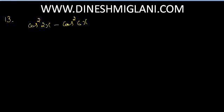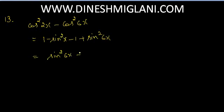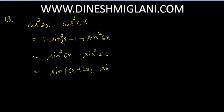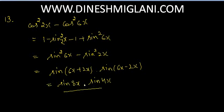Question 13: prove cos²2x − cos²6x = sin 4x · sin 8x. Convert: (1 − sin²2x) − (1 − sin²6x) = sin²6x − sin²2x. Using sin²A − sin²B = sin(A+B)·sin(A−B): sin(6x + 2x) · sin(6x − 2x) = sin 8x · sin 4x. Hence the answer is sin 8x · sin 4x.